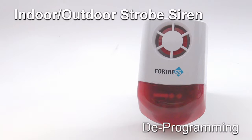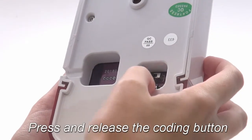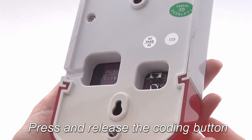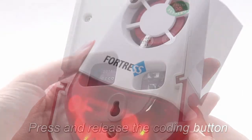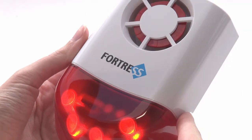To start, make sure the siren is on, then press and release the black coding button. The light should come on and stay on.